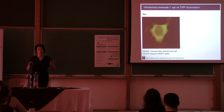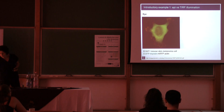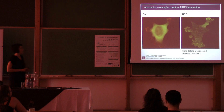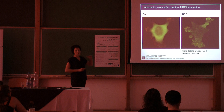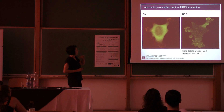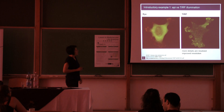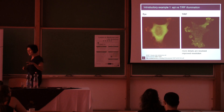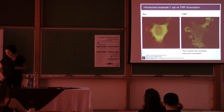If you switch to TIRF illumination, you will selectively illuminate the layer of the cell which is close to the glass surface. By doing so, you immediately start to resolve some fine localization details about your proteins. So it seems that with TIRF you can get more details and improve the resolution.